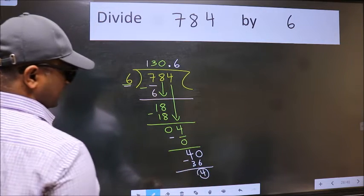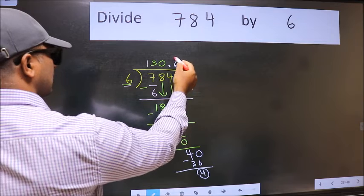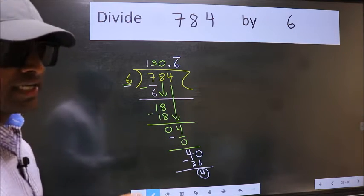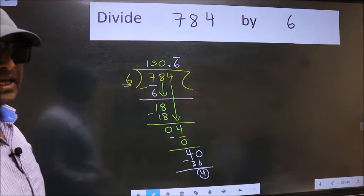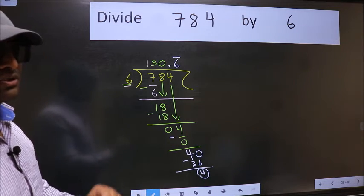We got 4 again. That means, we get bar on this number. Did you understand where the mistake happens? You should not do that mistake.